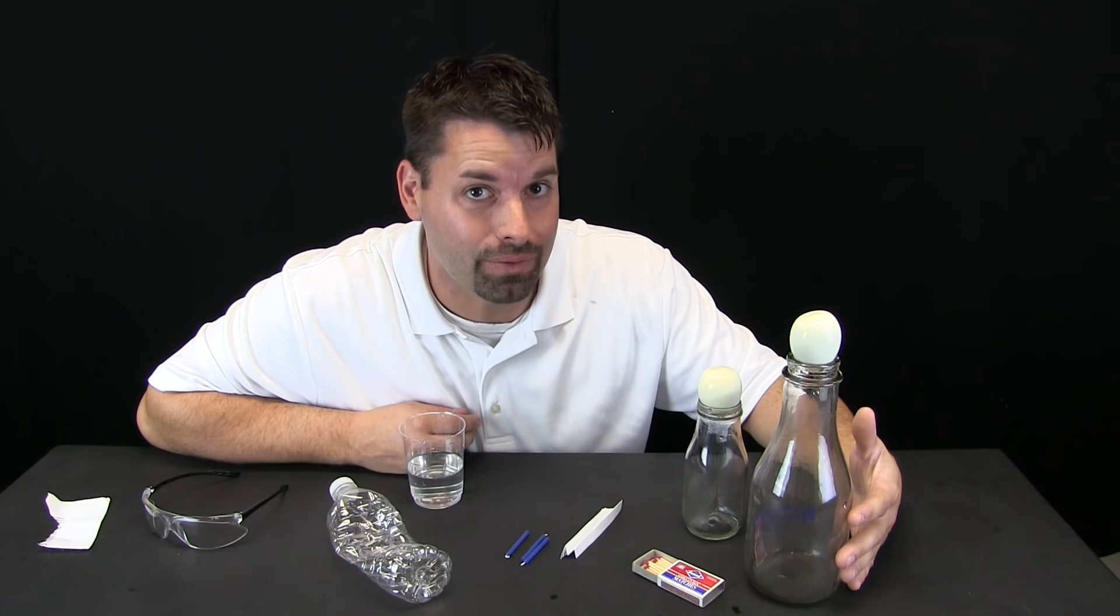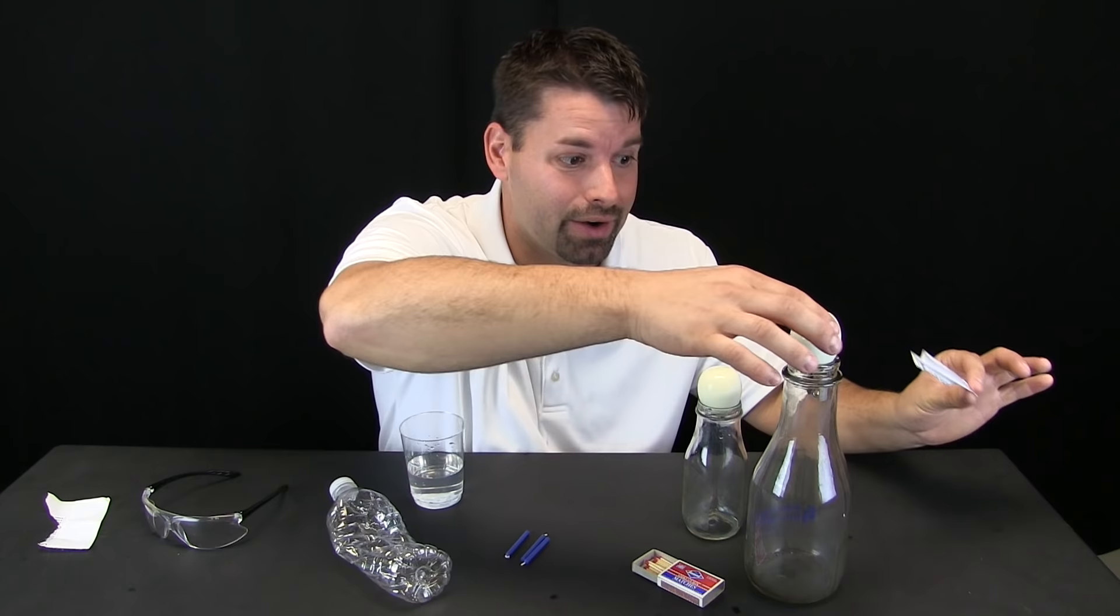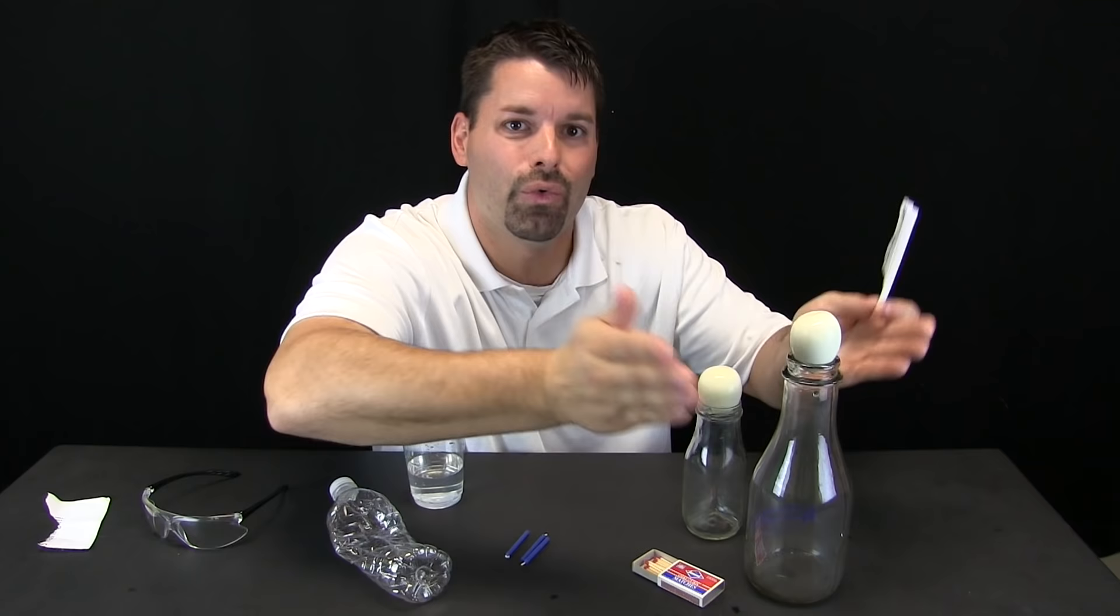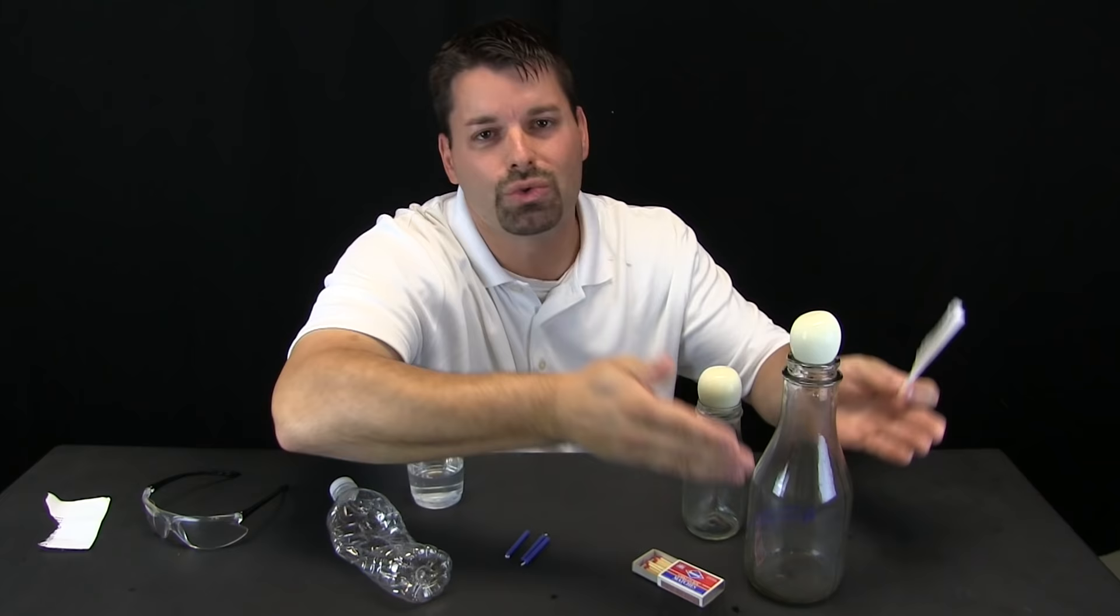So how do we get the air out of the bottle? Well, that is where science comes in. We are going to use this piece of paper. We are going to light this piece of paper on fire. We are going to drop the piece of paper in the bottle and put the egg on top. As that paper burns it heats the air. And then we are going to zoom in so you can take a closer look at the egg. You will see the air rushing past the egg. The egg will actually vibrate. It is vibrating because the hot air is rushing past the egg.